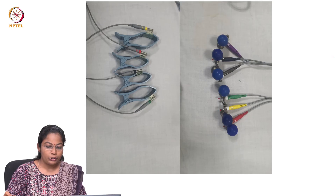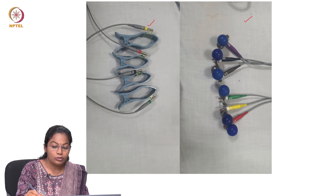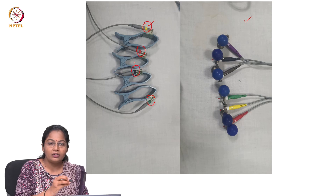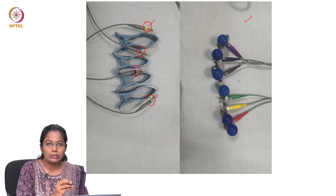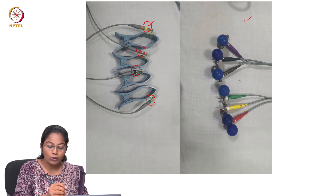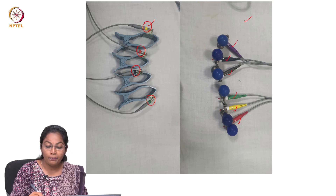This picture explains the colour code. These are the limb electrodes marked as red, green, yellow and black, placed in the corresponding arms. The second picture is about the chest leads, also coded with colours: red, yellow, green, brown, black and purple.